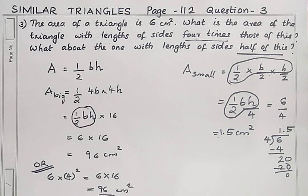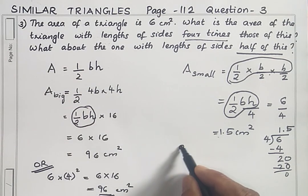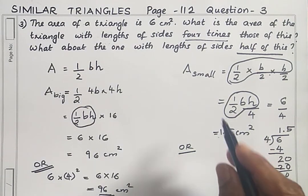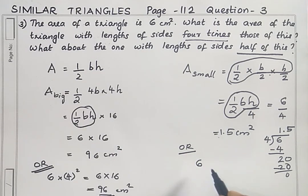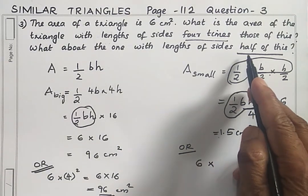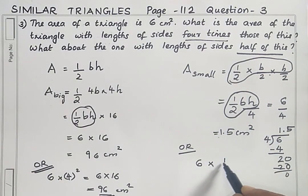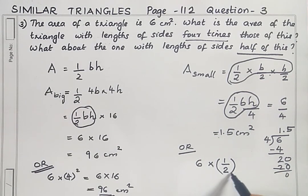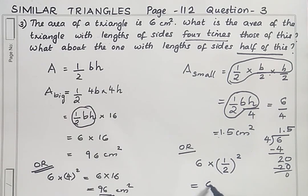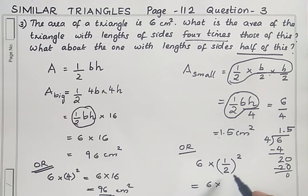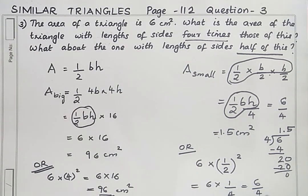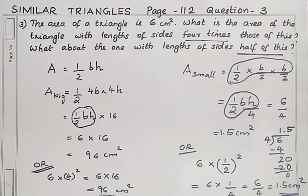Using the scale factor method: the area of the triangle is 6. The scale factor is half. So scale factor squared is (1/2)² = 1/4. Area = 6 × 1/4 = 6/4 = 1.5 cm². The scale factor is half, so the new area is 1.5 cm².